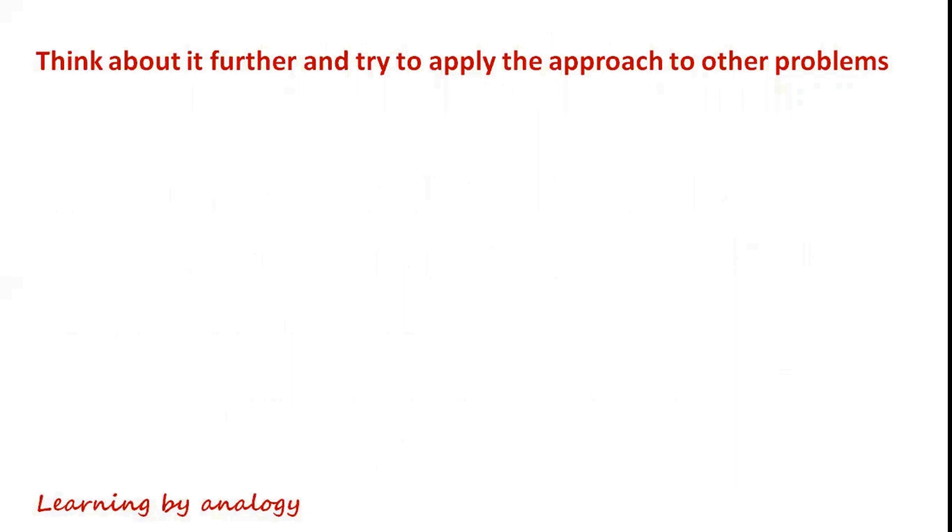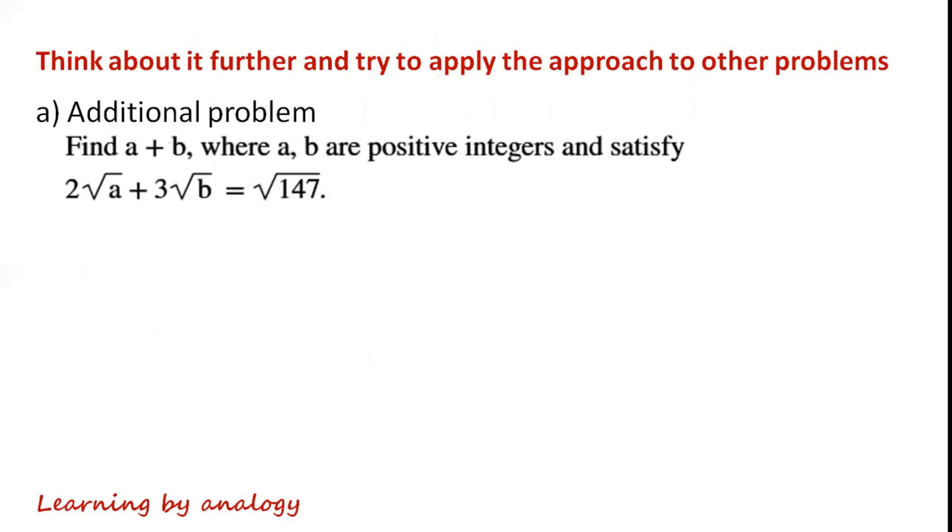Think about the thought process for the previous question further and try to apply the approach to other problems. Such as this one: find a plus b where a, b are positive integers and satisfy 2√a + 3√b = √147.